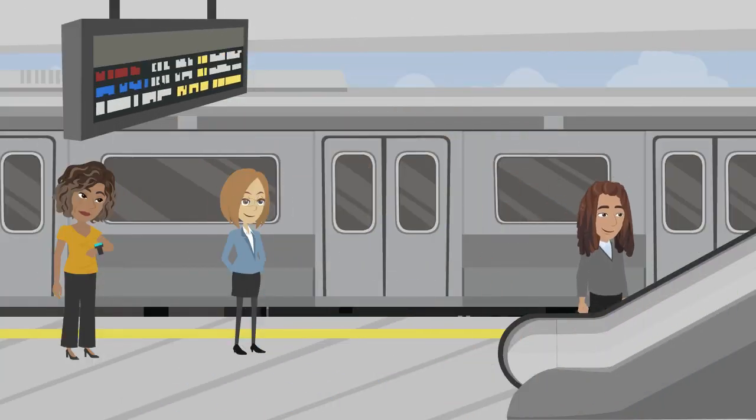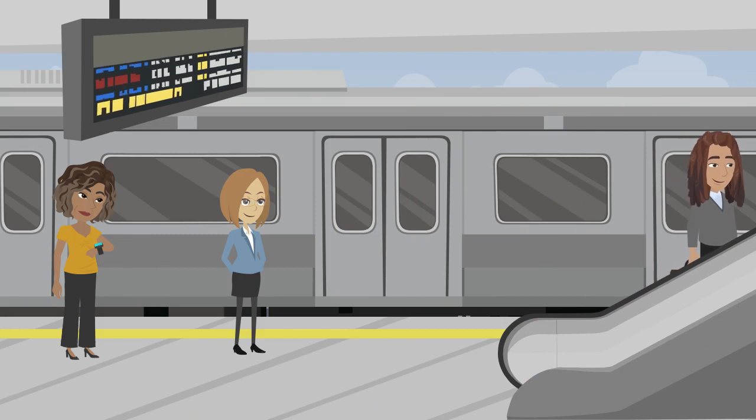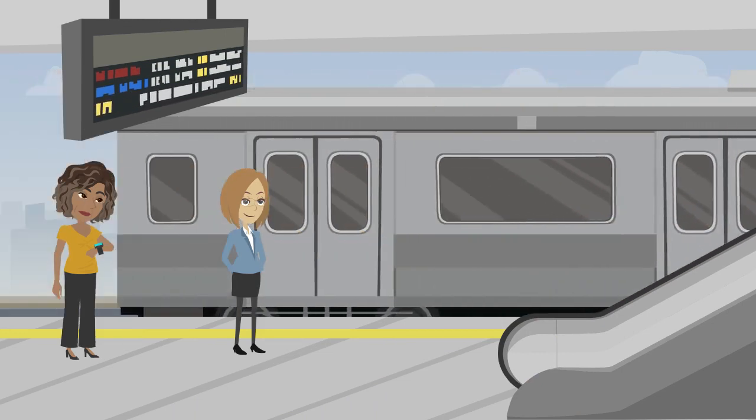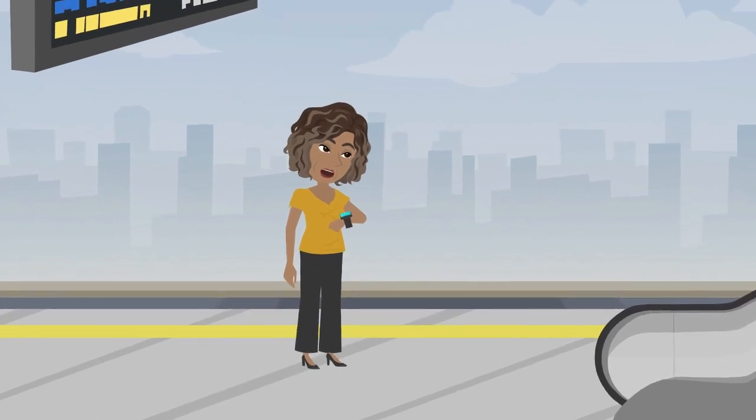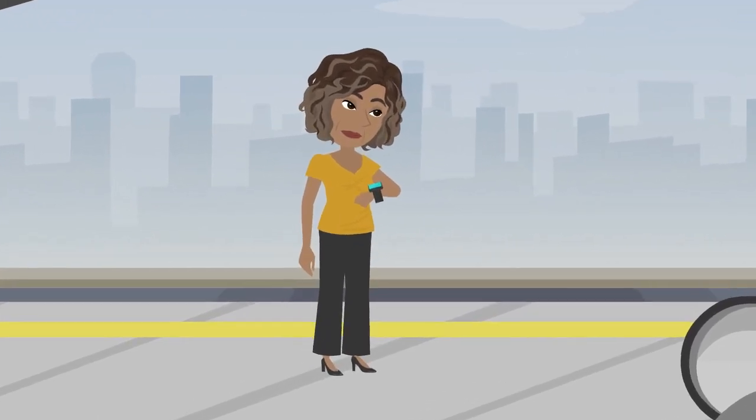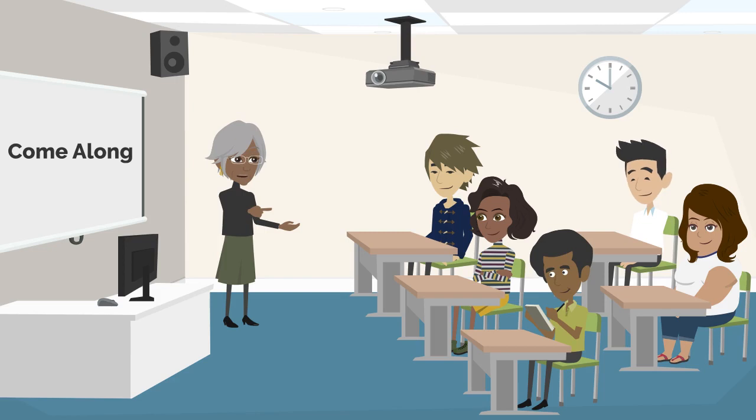Our last meaning of come along is about the act of appearing or arriving at a place. My friend should be coming along any minute now. We're meeting at the train station. Come along in this context indicates the expected appearance or arrival of someone.